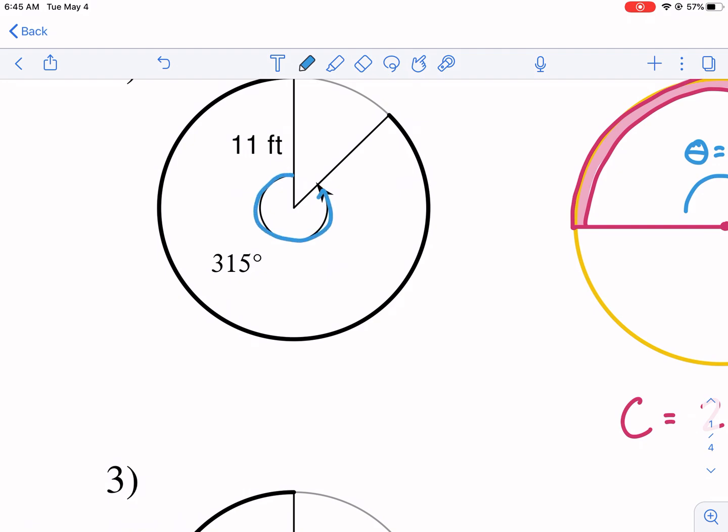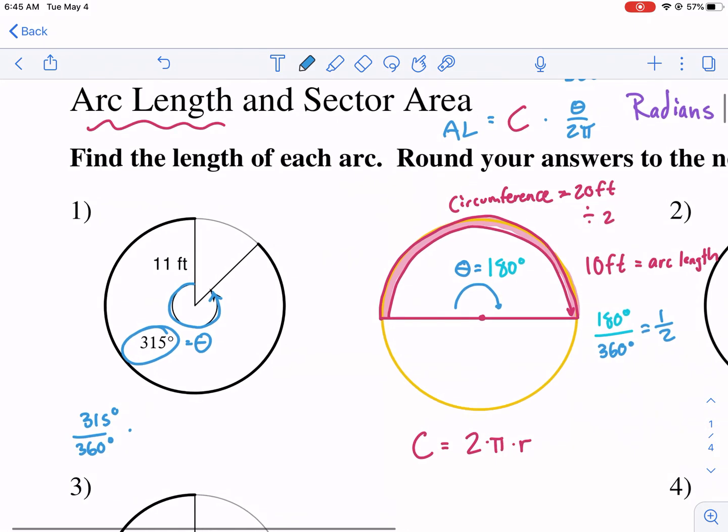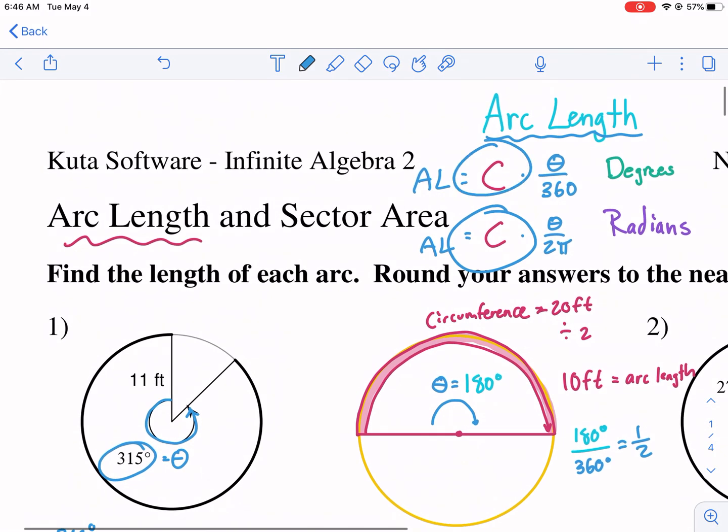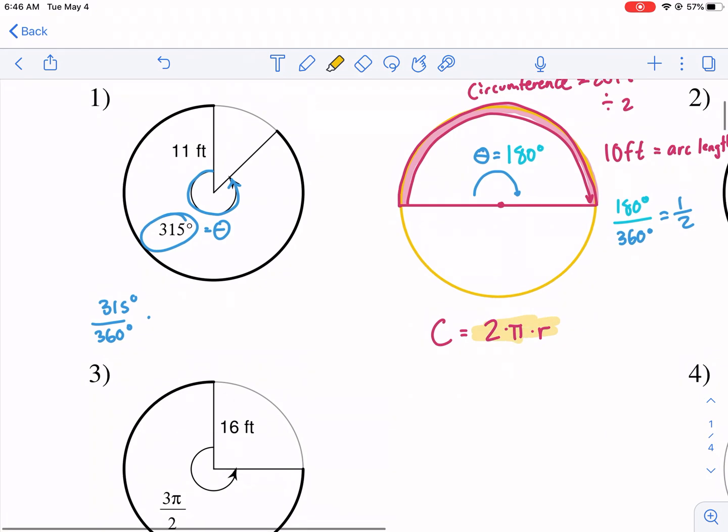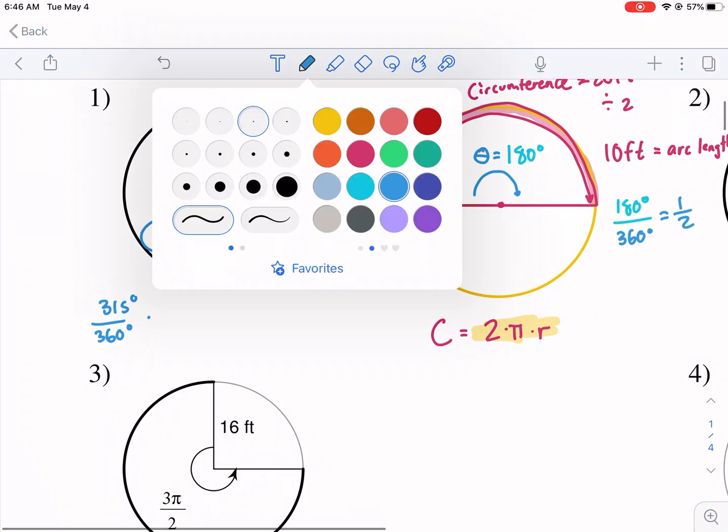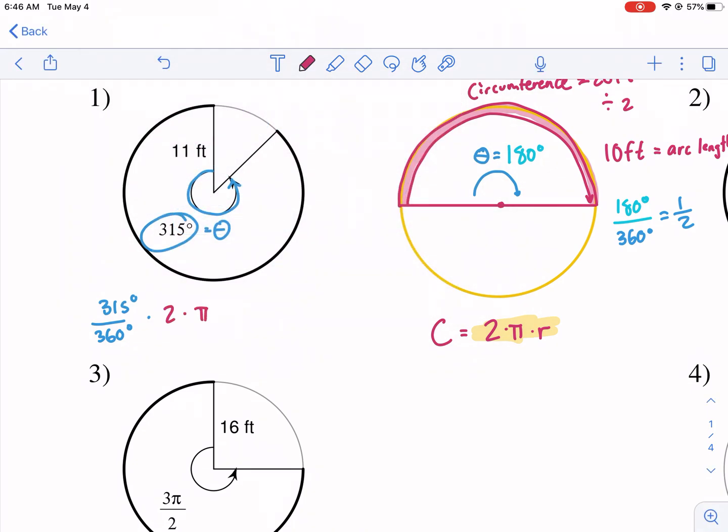Here's our theta. Our theta is always our angle of our desired arc length. So we have 315 degrees. We're going to divide that by 360 to see what portion we have. Now we need to multiply that by circumference. That's the critical ingredient of this that tells us the distance around the shape. Well, we know circumference is 2πr. So we're going to multiply this by 2 times π times our radius, which is 11 feet. And that's going to be equal to our arc length.